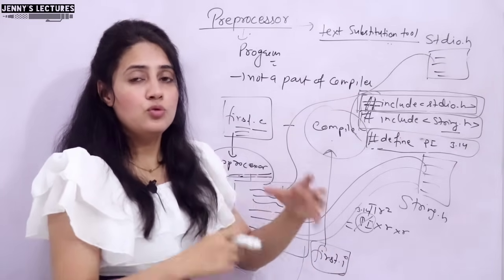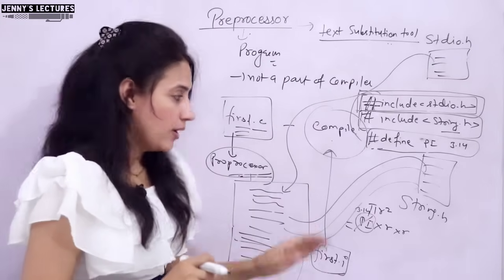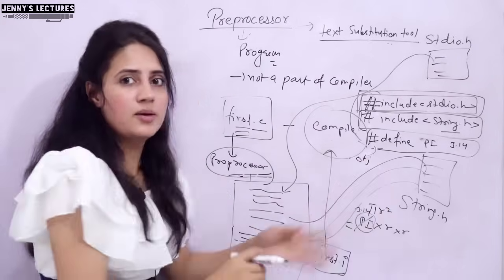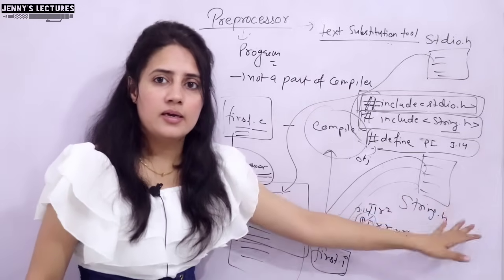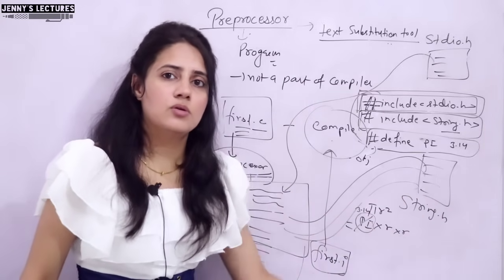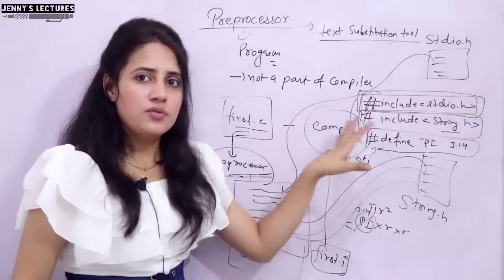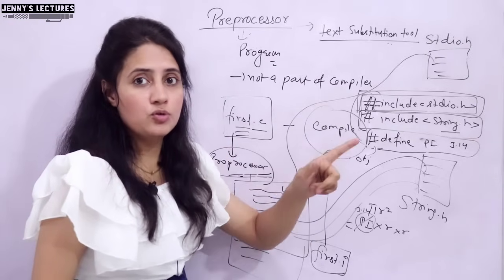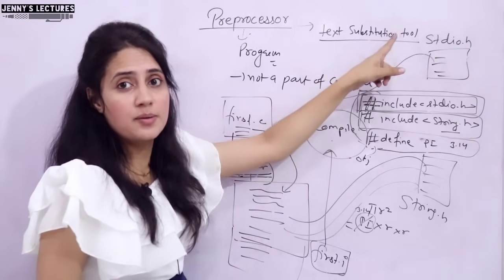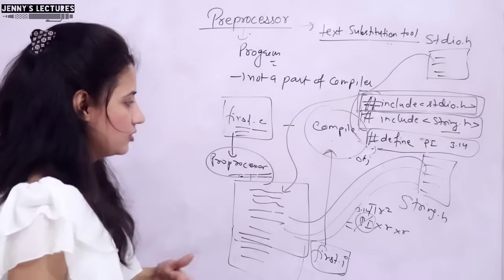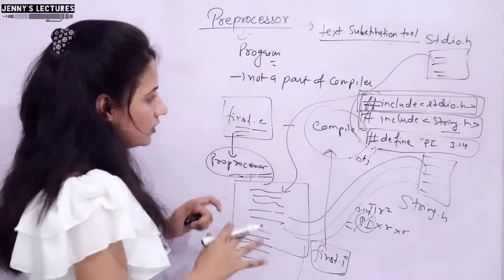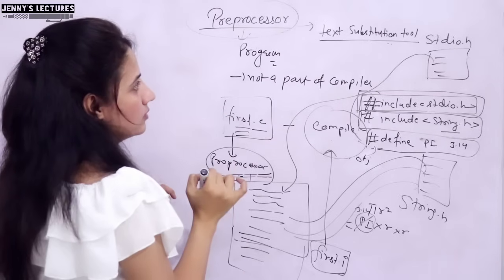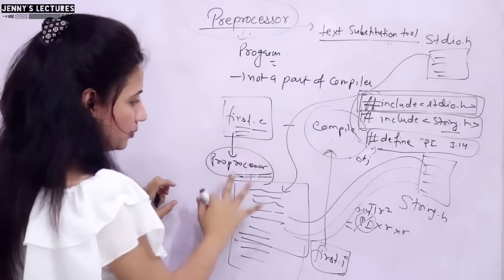If you want to know more about the execution of a C program - after preprocessing, the compilation creates a .obj file, then the assembler comes into action, then the linker, and finally we get the output. That complete process has been discussed in a previous video - the link will be in the i-button. The main goal of this video is to explain what a preprocessor is and what its function is.